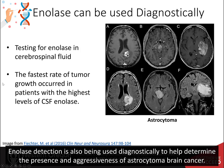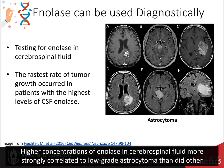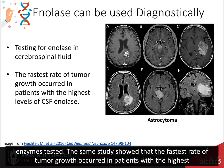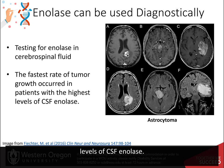Following the creation of the carbanion intermediate, the hydroxide on C3 is eliminated as water with the help of the glutamate residue, and phosphoenolpyruvate is formed. Enolase detection is also being used diagnostically to help determine the presence and aggressiveness of astrocytoma brain cancer. Higher concentrations of enolase in cerebrospinal fluid more strongly correlated to low-grade astrocytoma than did other enzymes tested, and the fastest rate of tumor growth occurred in patients with the highest levels of CSF enolase.